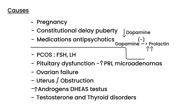At first this may seem like a very long list, but think about it: pregnancy is easy to remember; constitutional delay of puberty is easy; medications cause amenorrhea by disrupting hormone levels; PCOS is hormone-related; pituitary dysfunction is also hormones; ovarian failure is hormones because of estrogen; androgens and thyroid disorders are also hormones. The one structural category is uterine abnormalities — absent, abnormal, or obstructed uterus.